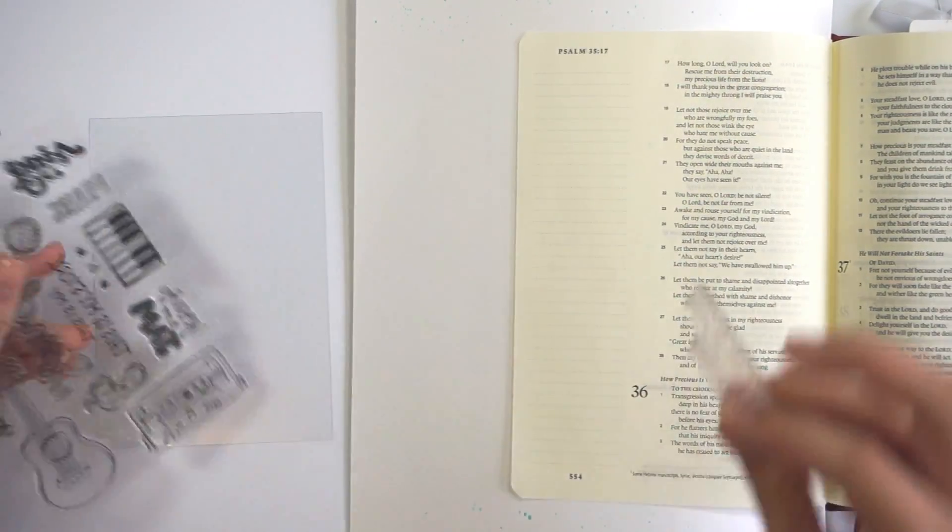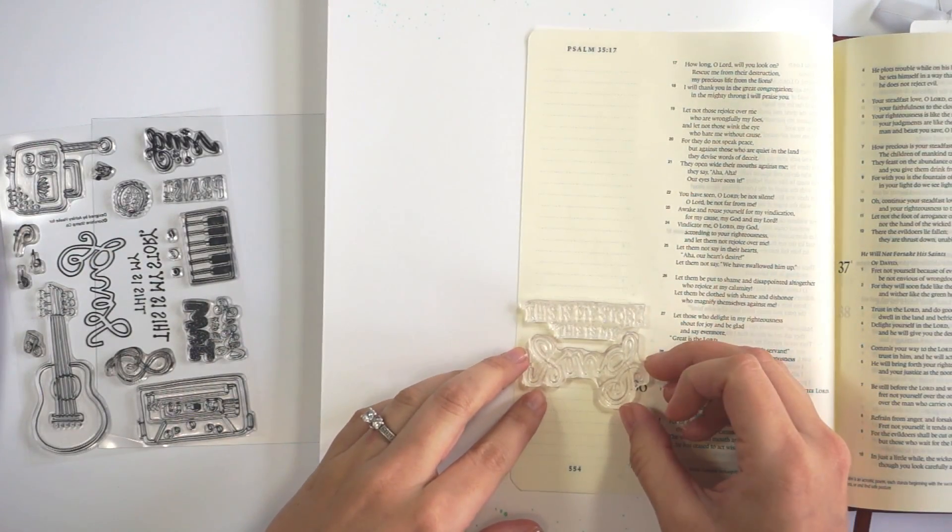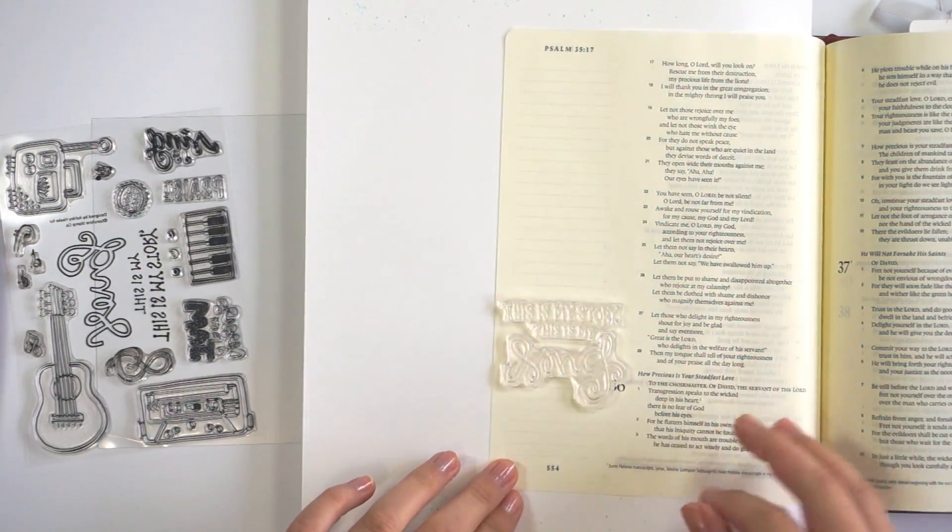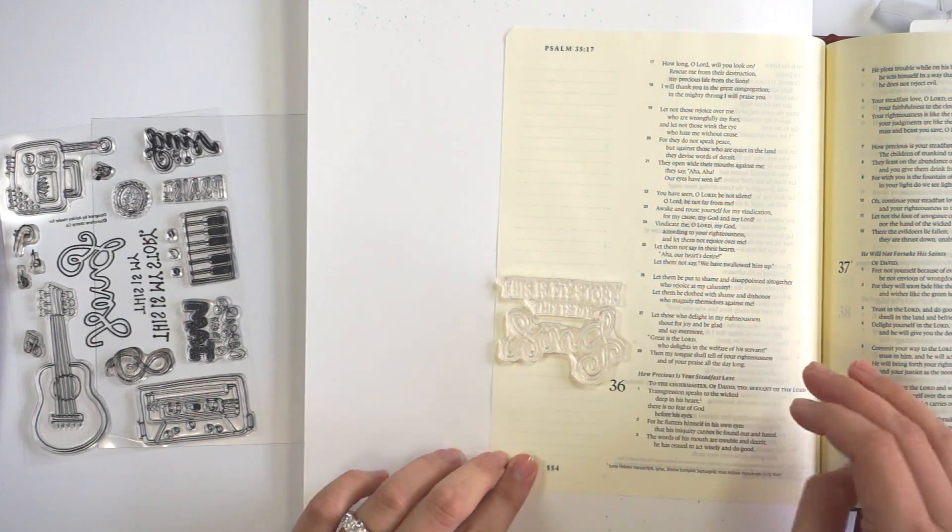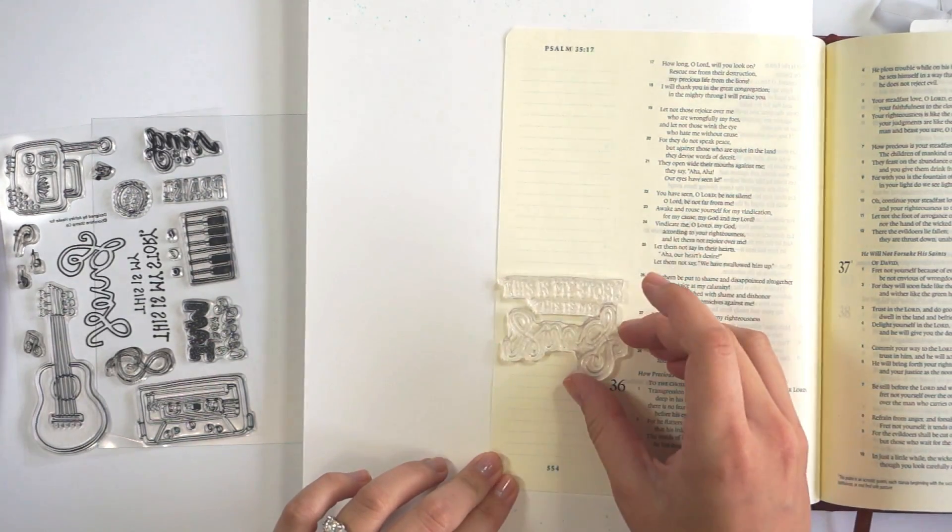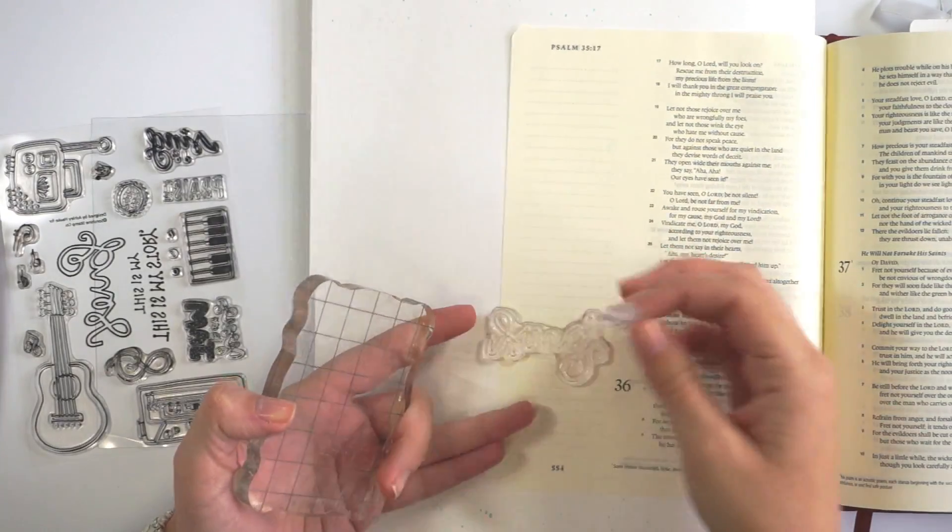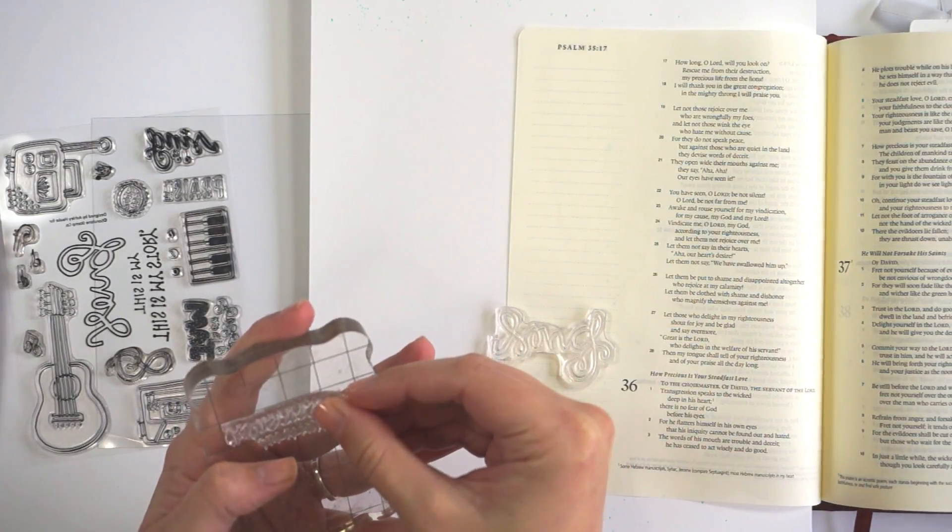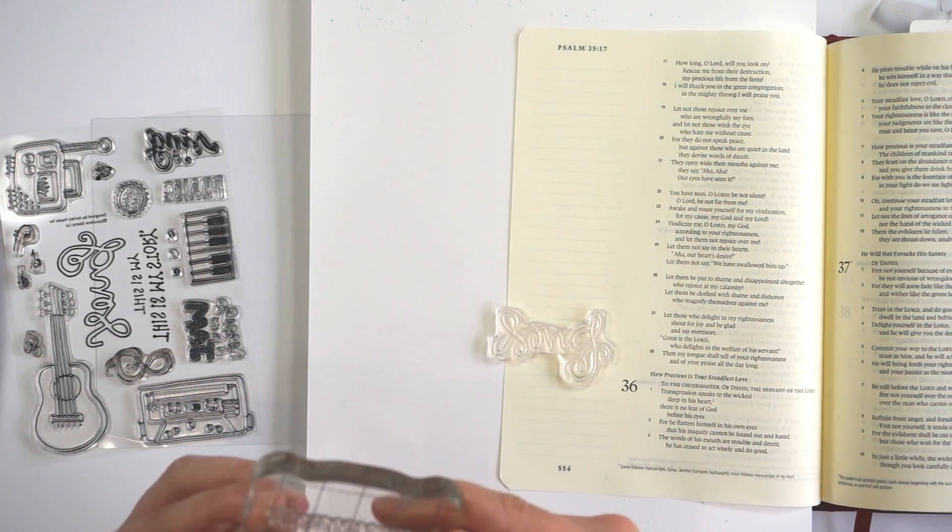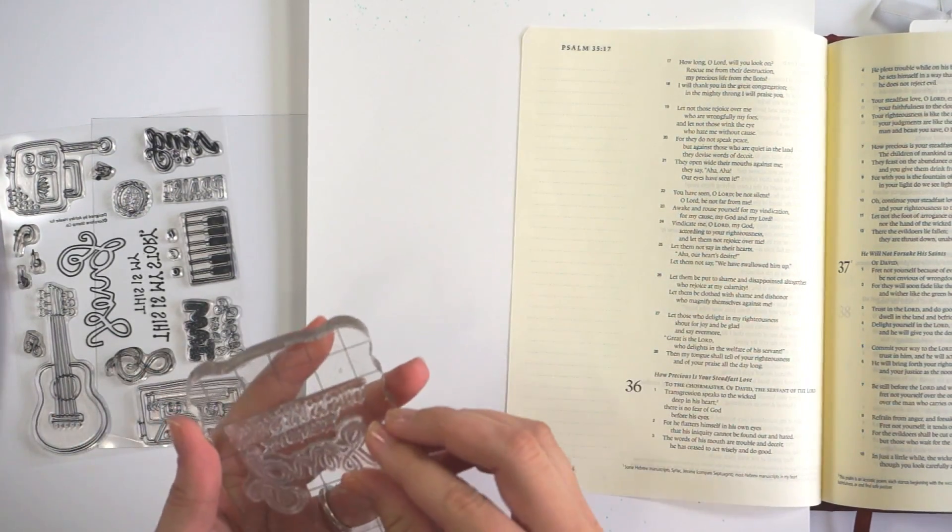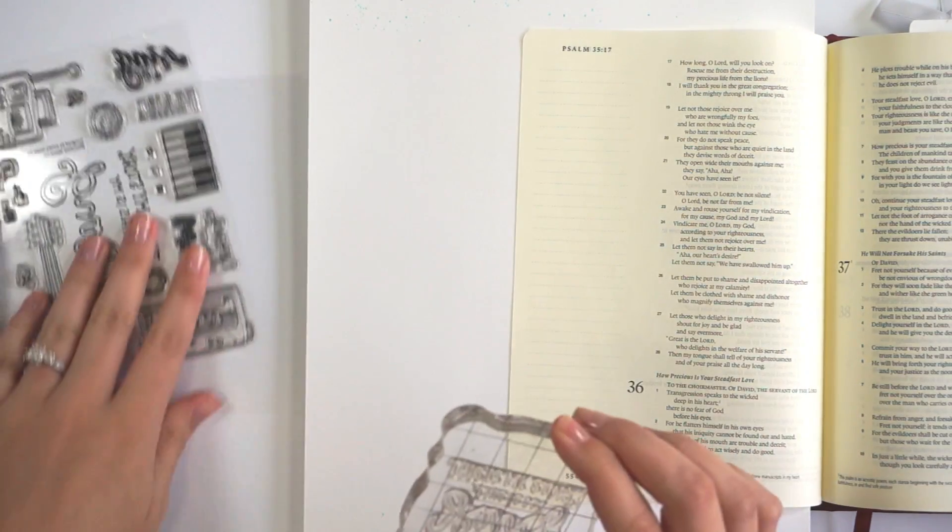I'm going to be doing some stamping and some ink smushing, really simple entry. This little set has a couple of stamps that say 'this is my story, this is my song,' which is from the Blessed Assurance hymn. I did a little bit of reading up on that hymn and found a Bible verse that kind of went along with it.